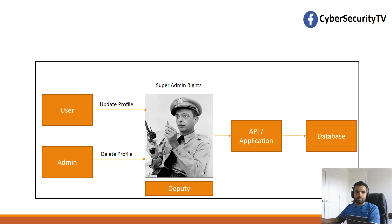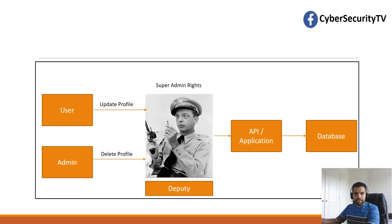The Confused Deputy problem occurs when a user with update profile permission instead calls delete profile. What should happen in the real world is the Deputy checks the user request and when passing it to the application, should pass both what the request is — delete profile — and where it came from, i.e., whether the user has permission to delete. The application then evaluates both things and decides. Instead, what happens is the Deputy simply makes a request to the application to delete the profile. Since the request came from the Deputy which has super admin rights, the application goes ahead and deletes the profile. That's the Confused Deputy.